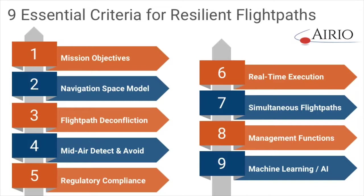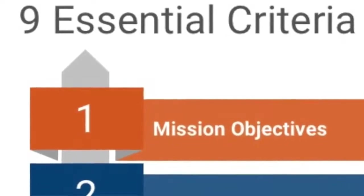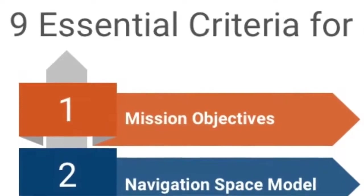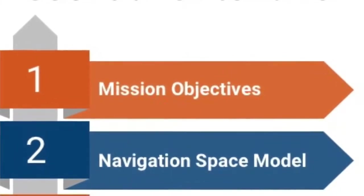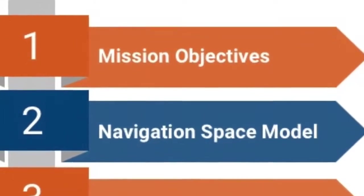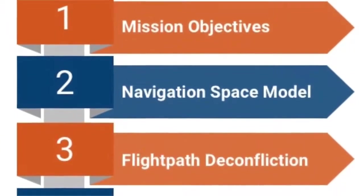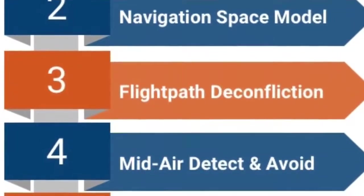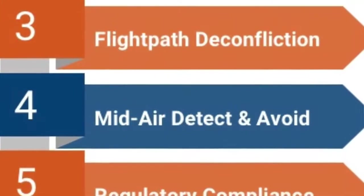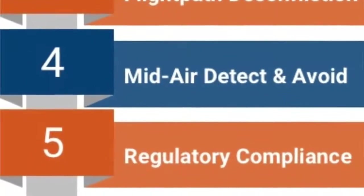To move towards our goal, we first identified nine essential criteria for a flight path management system we could call resilient. It must find paths that achieve mission objectives, ideally in some optimized way. It must operate within the available navigation space. It must not conflict with any other planned flight plans — we call this flight path deconfliction. It must not conflict with unplanned objects in the airspace, meaning it must have the capacity to integrate with existing detect-and-avoid systems. It must comply with regulations, and must be able to integrate into varied ecosystems of traffic management systems, vehicles, prescriptive rules, and geofences.